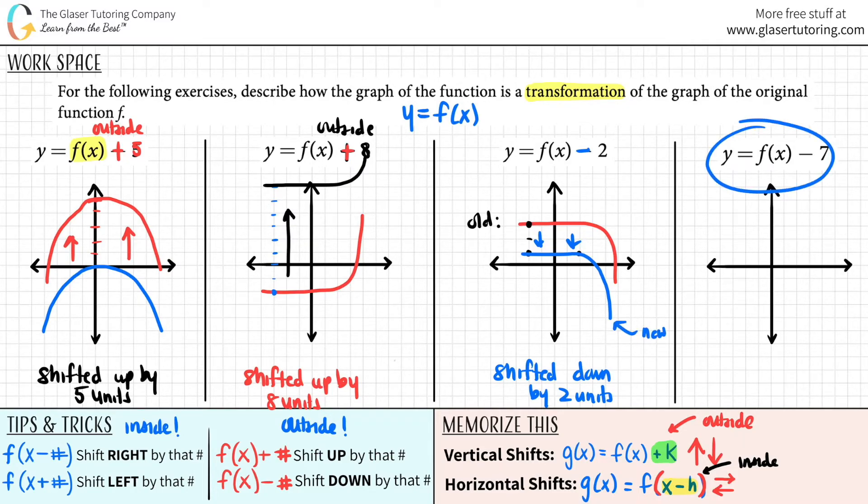Last one, we have a function and outside the function, there's a minus seven. So that's a vertical shift and it's a negative. So we shifted down by seven units.